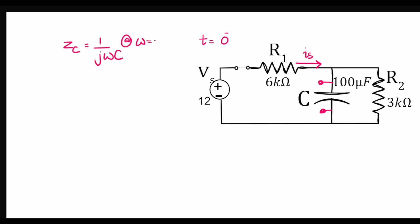so at DC, at ω equal to 0, the impedance offered by the capacitor is infinity. Therefore, for DC there cannot be any current flowing through the capacitor, and all of the supply current will flow through resistor R2.